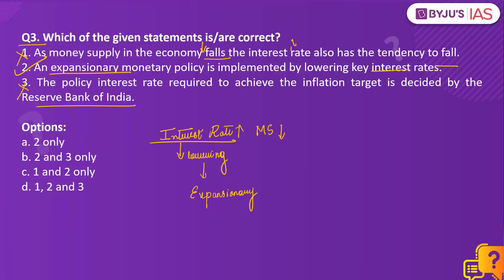Statement 3 is incorrect because in India we follow inflation targeting. The policy interest rate required to achieve this inflation target is decided by the Monetary Policy Committee and not the Reserve Bank of India. Please note that RBI is not synonymous with the Monetary Policy Committee, and it is such statements that can create confusion. Therefore, the right answer to this question would be Option A, 2 only.